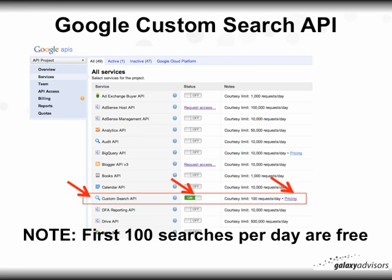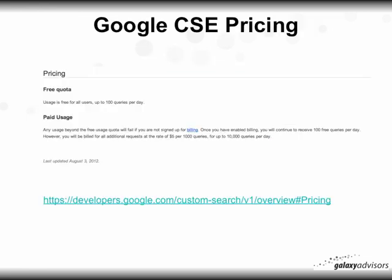The courtesy limit is that your first 100 requests per day are no charge. You can get 100 searches per day free with no credit card required. It's only if you go over that 100 and want to pay for more that you need to enter a credit card. Pricing is $5 per thousand queries for up to 10,000 queries per day.